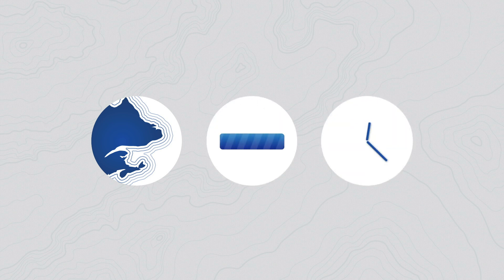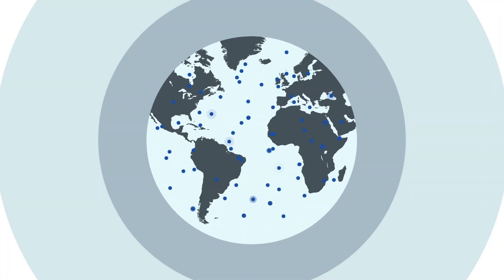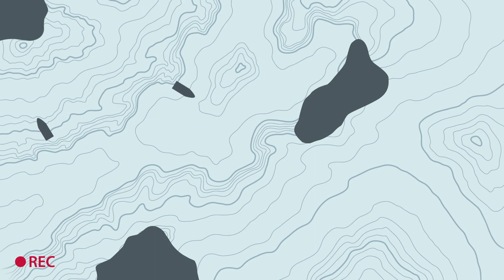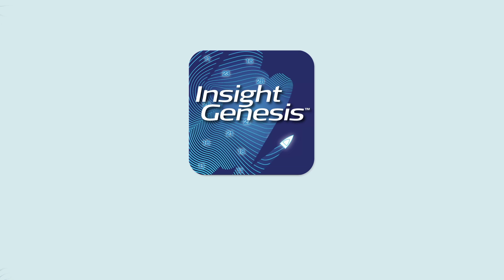You control what bodies of water are surveyed, when they are updated, then you can create and use that map the very same day. This means that thousands of Insight Genesis users are now able to generate enhanced mapping content around the globe. It's easy to record your very own personalized contour map, and even add unique overlays for vegetation and bottom hardness, using Insight Genesis' four easy steps.